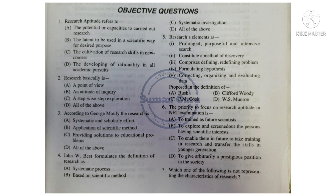Question 6: The priority to focus on research aptitude in NET examination is — Option A: To train as future scientists. Option B: To screen out persons having scientific interests. Option C: To enable them in future to take training in research and transfer the skills in younger generation. Option D: To give arbitrarily a prestigious position in society. Answer is Option C.